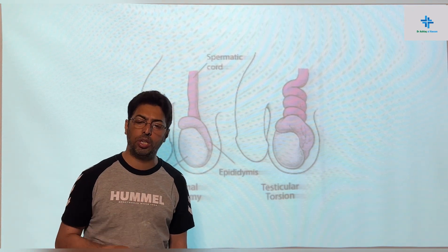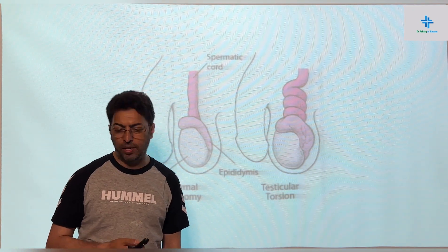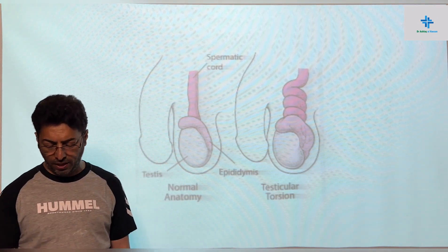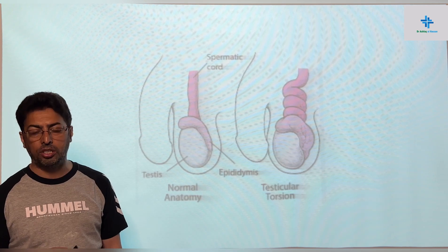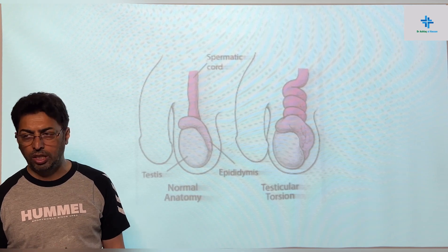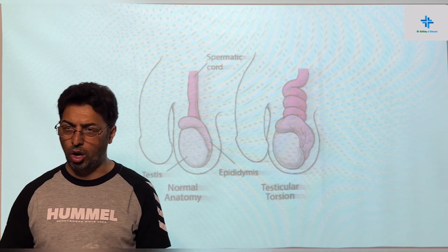Sometimes the testes can twist upon itself — a very important and rapidly progressing condition given the name testicular torsion. The testes can twist around itself and compromise the blood supply, causing the testes to die. This is a rapidly evolving condition with tenderness and inflammation in the scrotal sac, and it should be recognized very early.